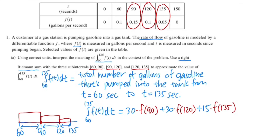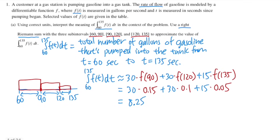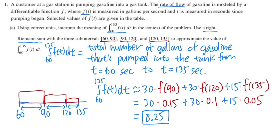This is an approximation, so: 30 × 0.15 + 30 × 0.1 + 15 × 0.05. Using the calculator, we get 8.25 gallons. This represents the total number of gallons of gas pumped into the tank from 60 to 135 seconds — just an approximation.